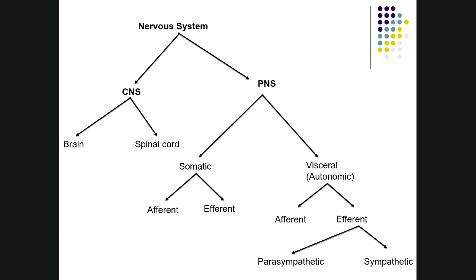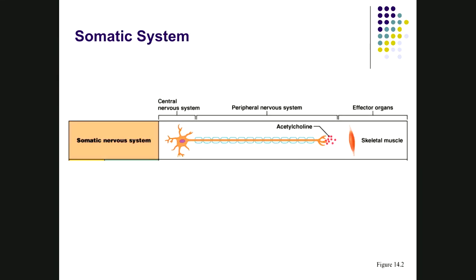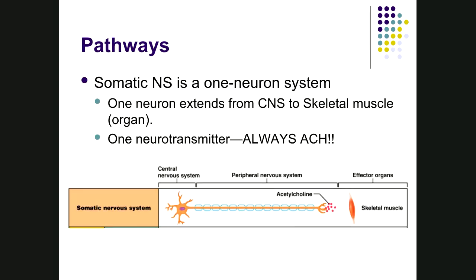Comparing the somatic efferent to the autonomic efferent: the somatic efferent is a one-neuron system. One neuron goes all the way from the brain or spinal cord to the effector organ, which is always skeletal muscle. This produces voluntary movement and must happen quickly, so these are type A neurons — heavily myelinated, large in diameter, and very fast. The neurotransmitter is always acetylcholine.